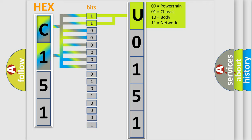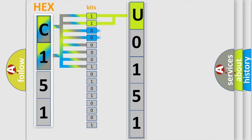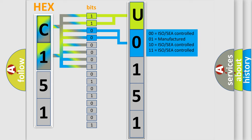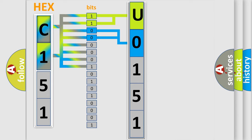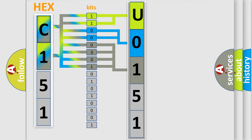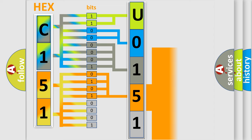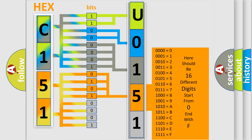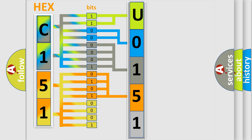The next two bits determine the second character. The last four bits of the first byte define the third character of the code. The second byte is composed of a combination of eight bits. The first four bits determine the fourth character of the code, and the combination of the last four bits defines the fifth character. A single byte conceals 256 possible combinations.